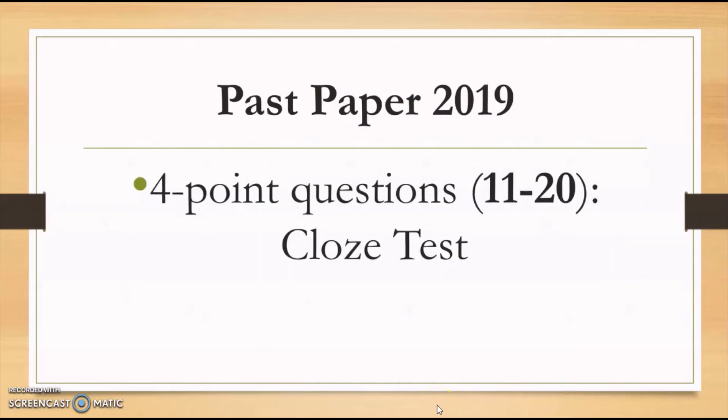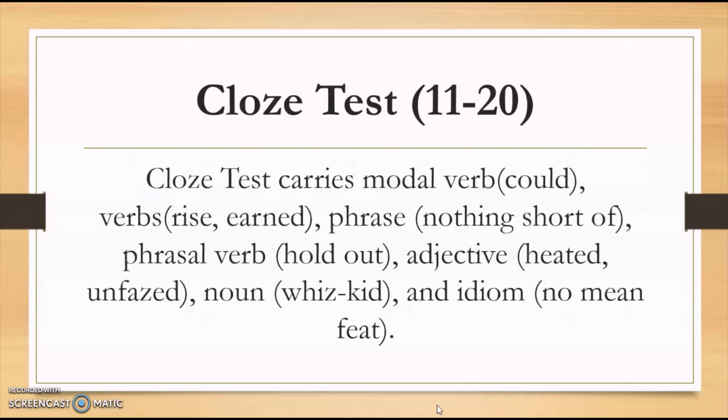Four point questions is a closed test where you have to read a given text and make an appropriate choice from the given options. The missing words can be one of the modal verbs like could, or a verb like rise and earn. It could be a phrase like nothing short of, which means almost. It could be a phrasal verb like hold out, which means survive in difficult circumstances. It could be an adjective like heated or unfazed, which means composed. Or it could be a noun like whiz kid, a young person who is successful at something. Or it could be an idiom like no mean feat, which means a great achievement.